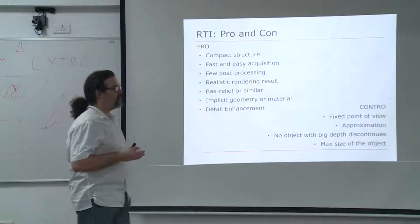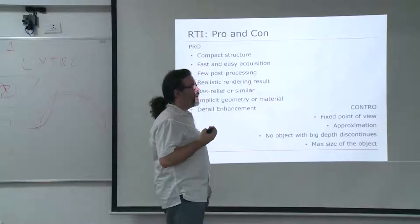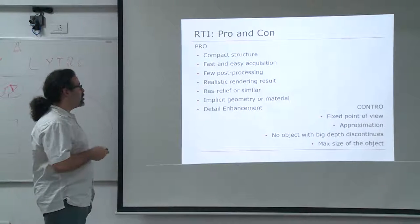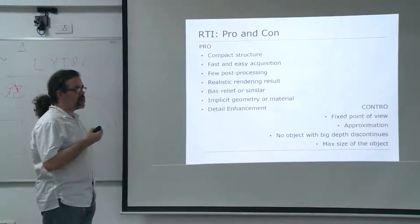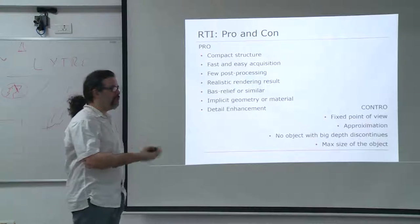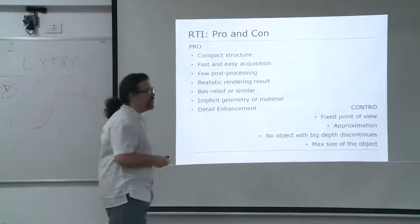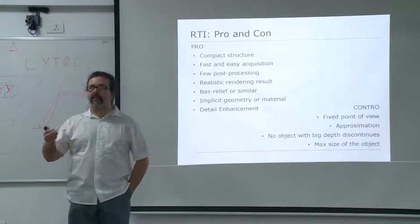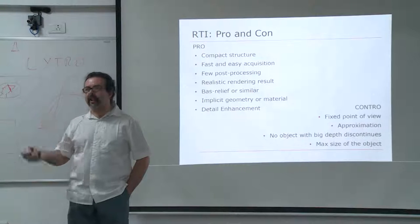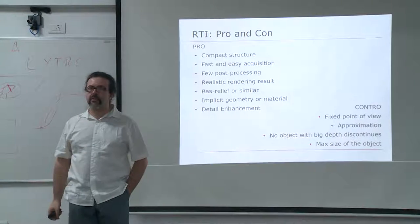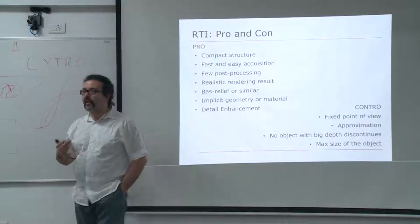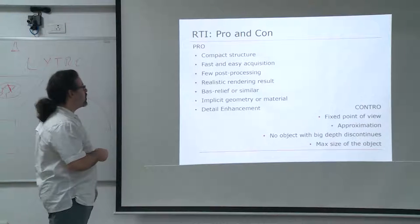RTI is a compact structure — it's fast and easy to acquire. We will see that the timings are not as small as you may imagine, like taking photos. The post-processing is simple enough: there are tools for automatic post-processing. The rendering results displayed to the public are really realistic because you are using data coming directly from photos — it's an image-based representation. Yes, it has a mathematical intermediate representation for storage, but most of the data directly comes from the photo.